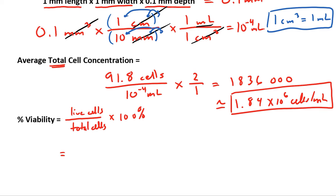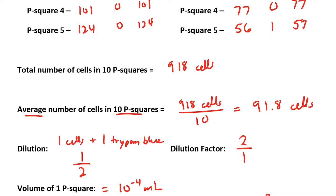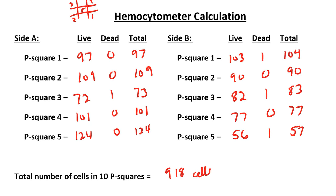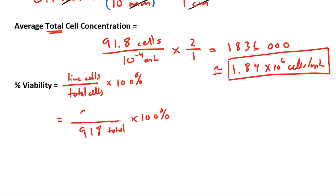Now we know we had 918 cells, total cells. The question is, is how many live cells did we have? Let's go back to the data. Here's our data. Instead of counting live cells, let's count dead cells. I have 1, 2, 3, 4. So to get the number of live cells, I subtract 4 dead cells from the total. 914.